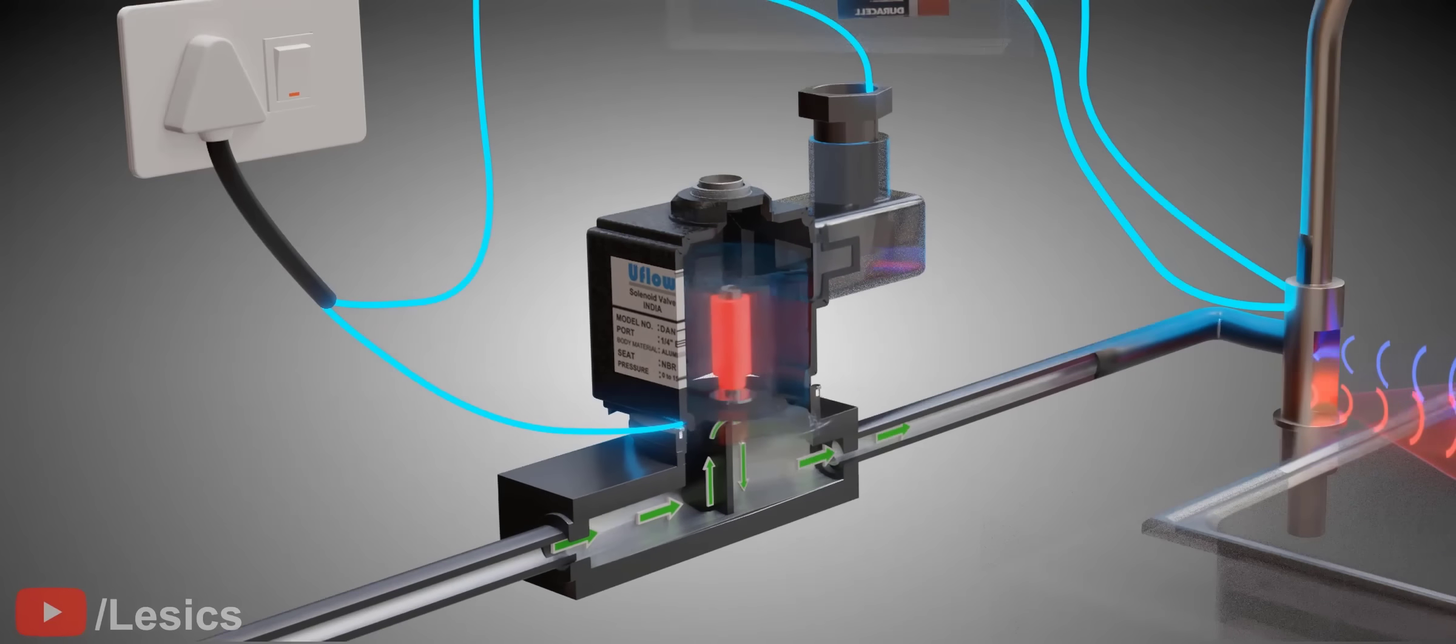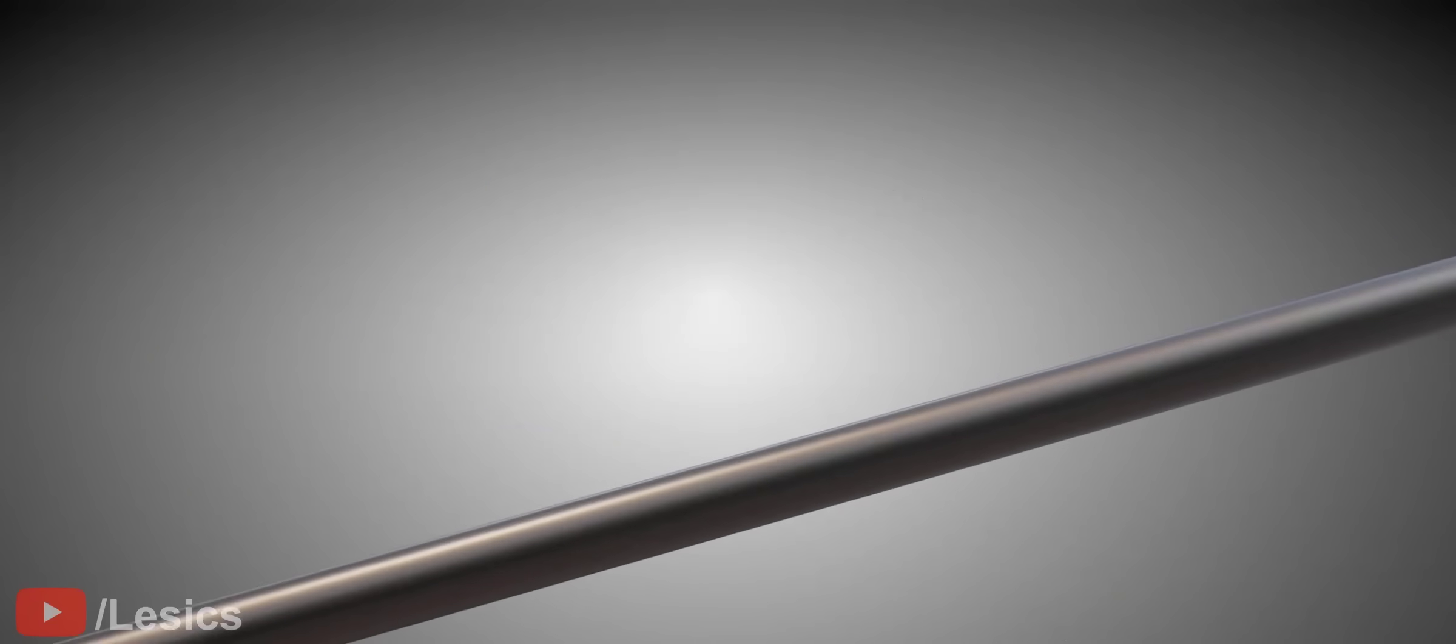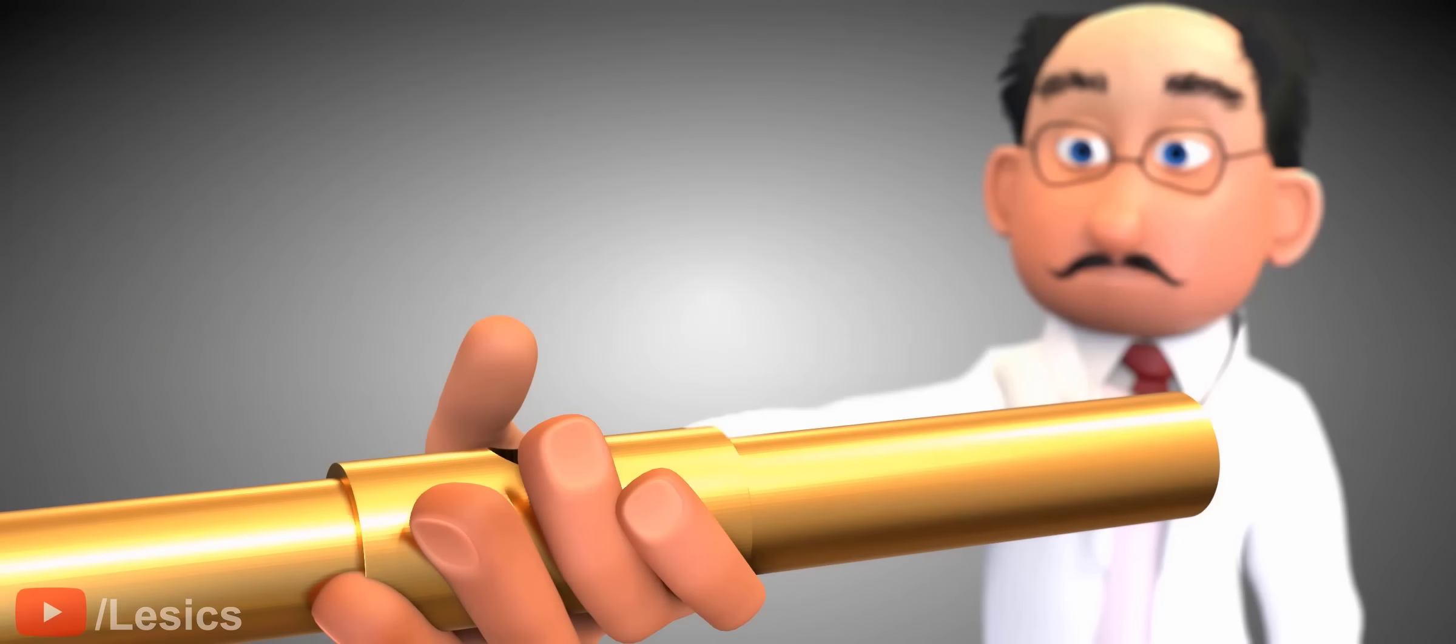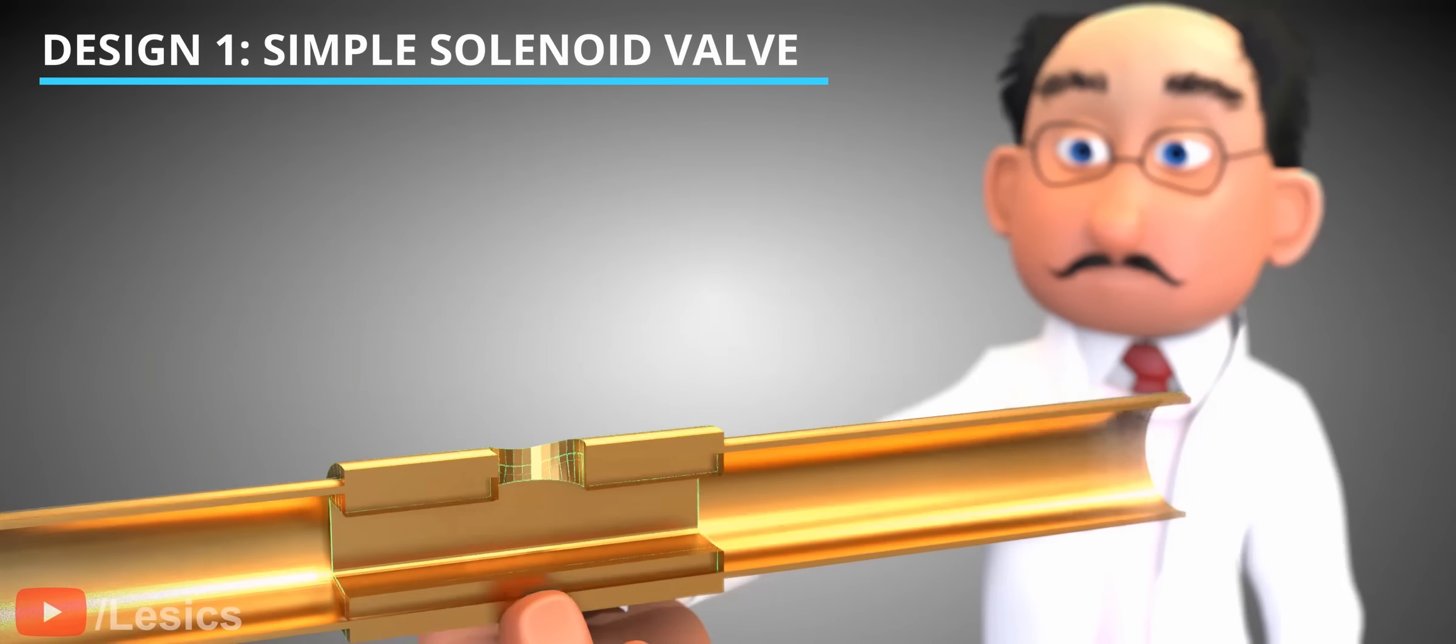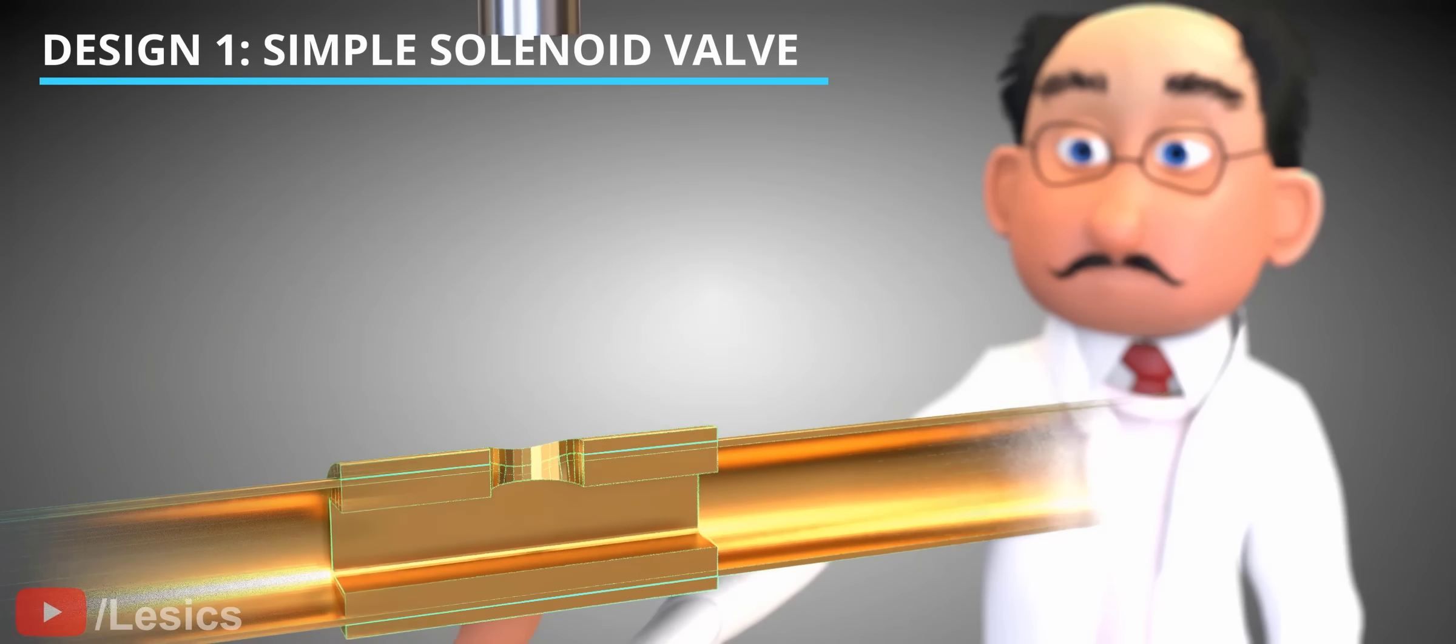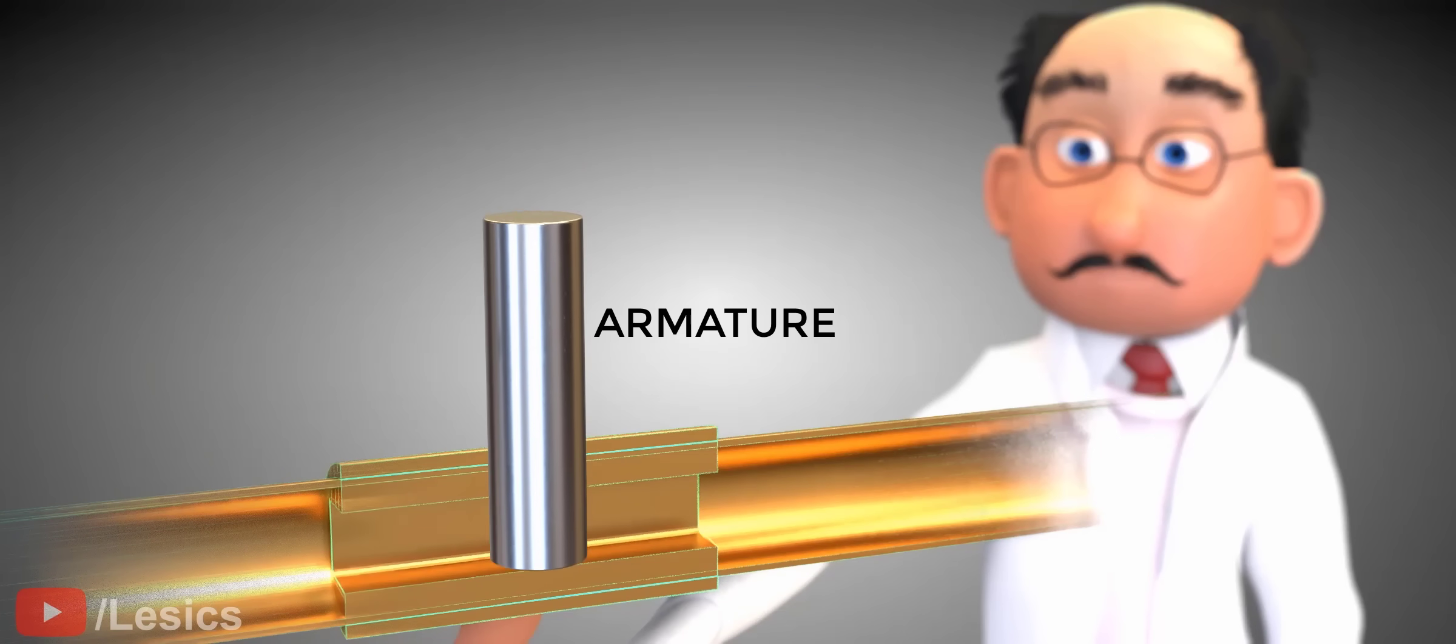Let's explore the impressive engineering behind solenoid valves starting from the simplest one. Let's see the construction of the simplest solenoid valve possible. First, keep an iron armature perpendicular to the pipe. The armature is free to move as shown.